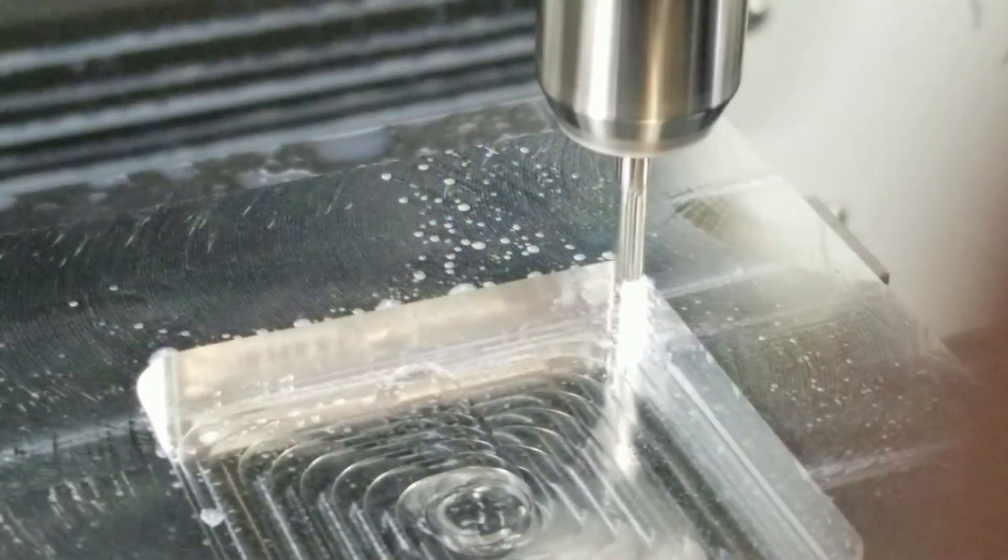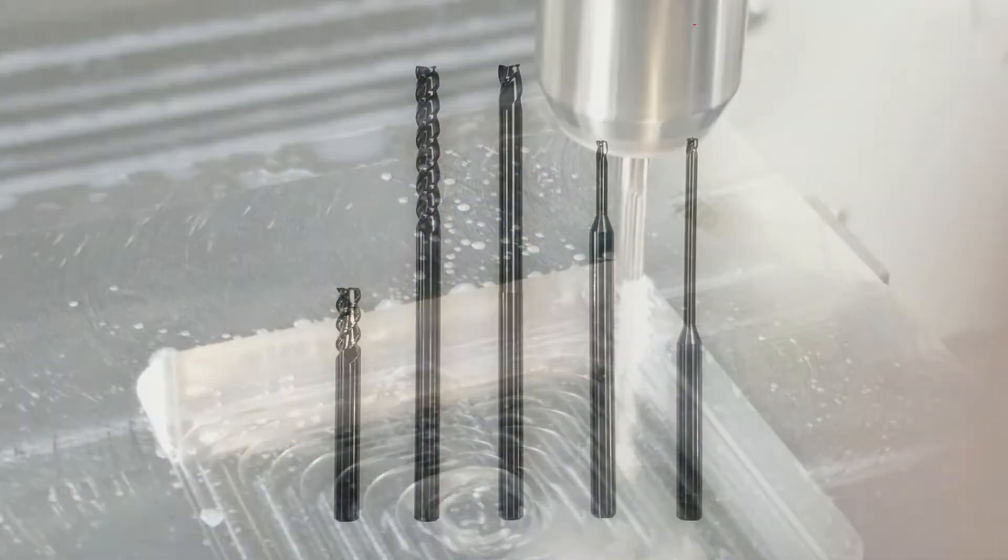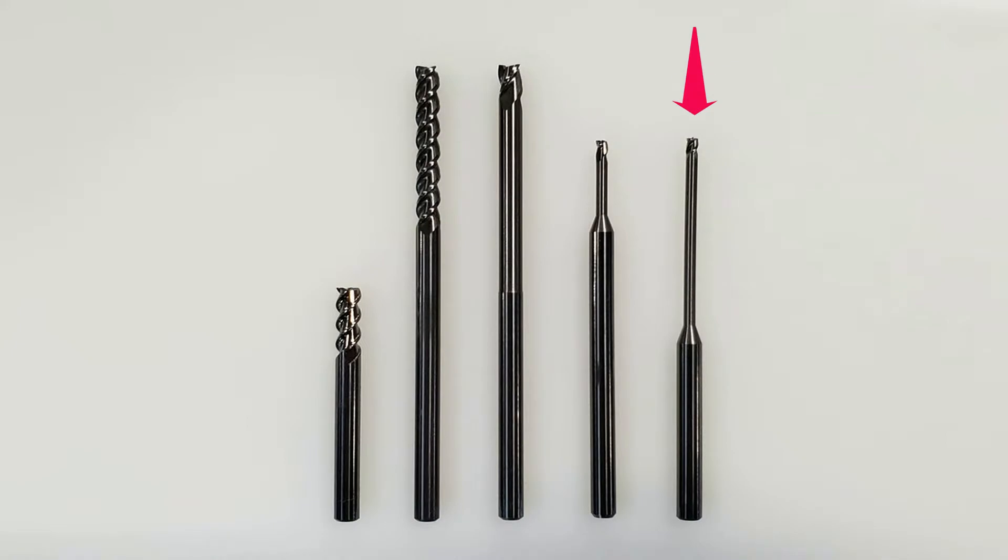One other thing to think about is the depth of the pocket your corner sits in. Deeper pockets require longer end mills.